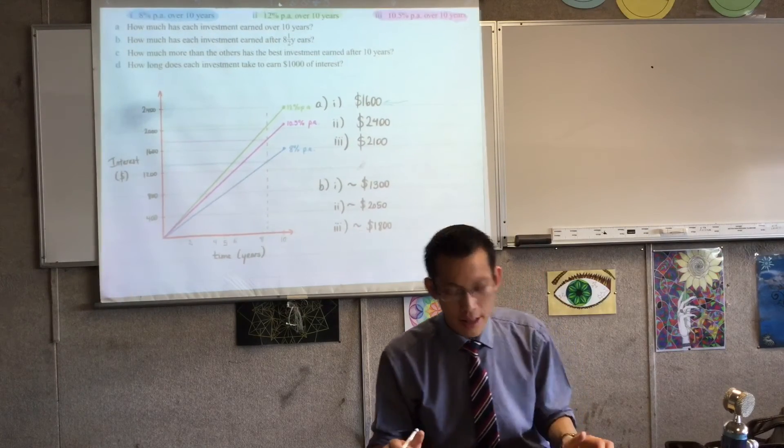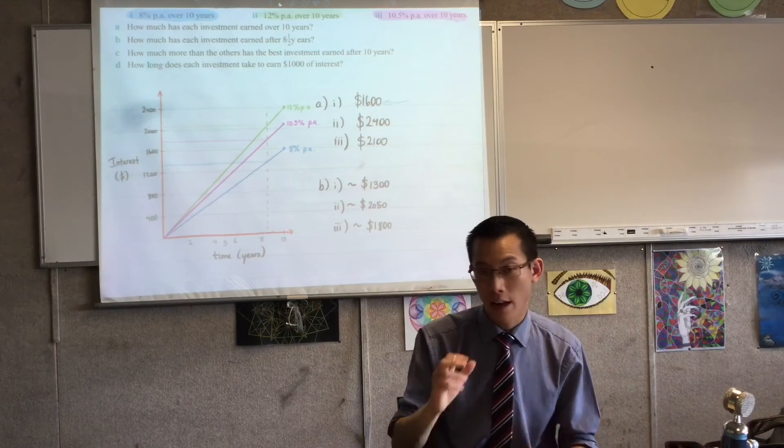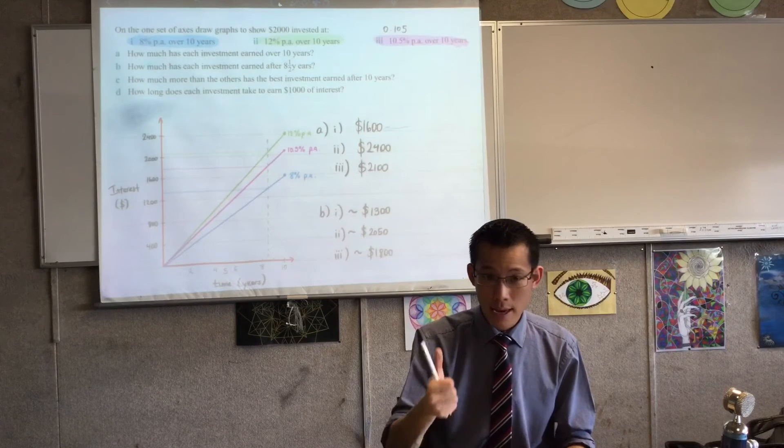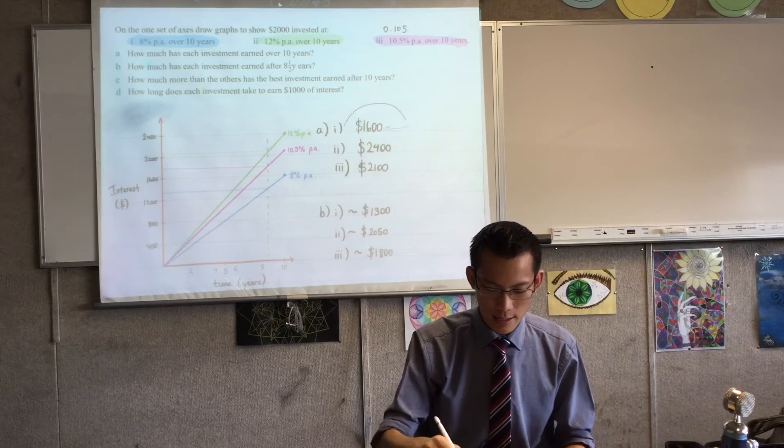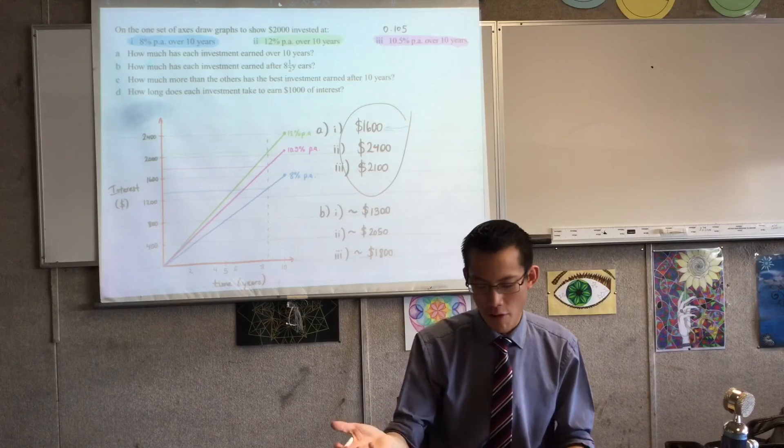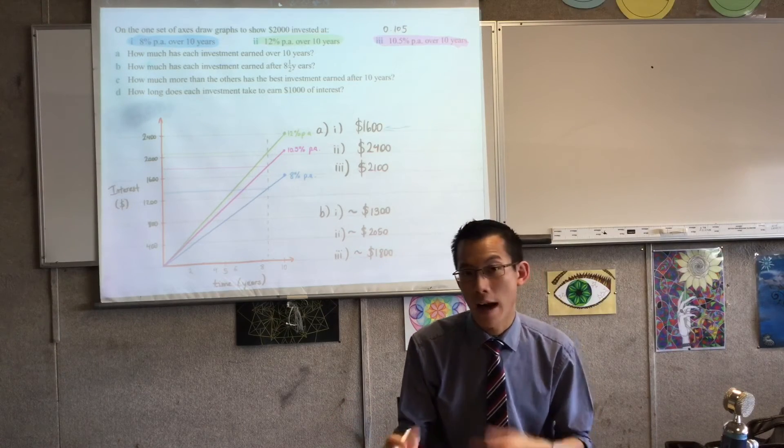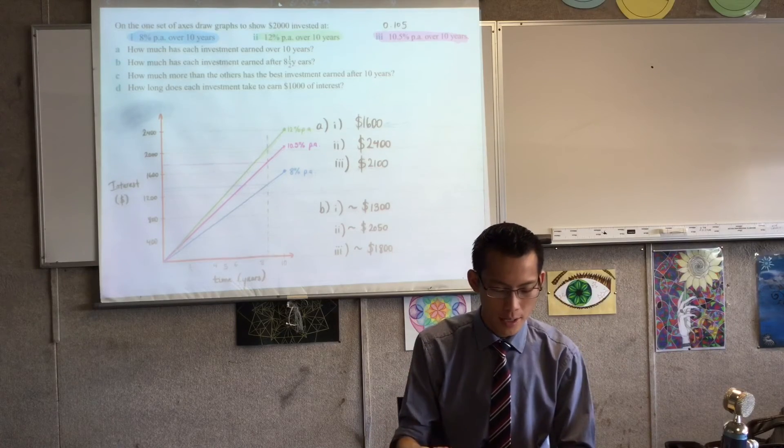Now it's worth mentioning that if I wanted to, rather than using the graphs, I could just go ahead and I could crunch the numbers and I could use PRN, just like I did in this case. And I could work out for eight and a half years, for 8.5 is my value of N, I could work out what these exact values are and see how close my graph was. Right. Let's have a look at the last couple of questions.